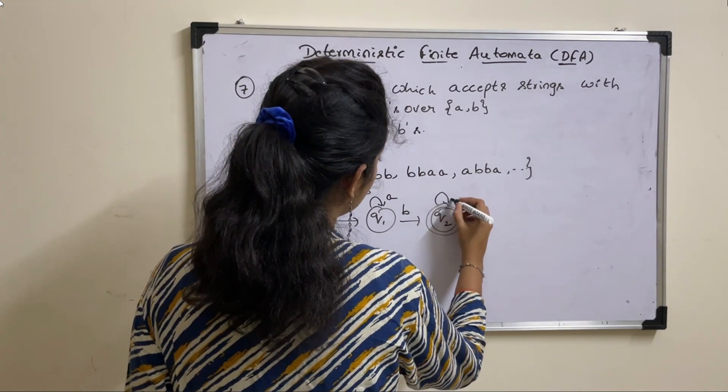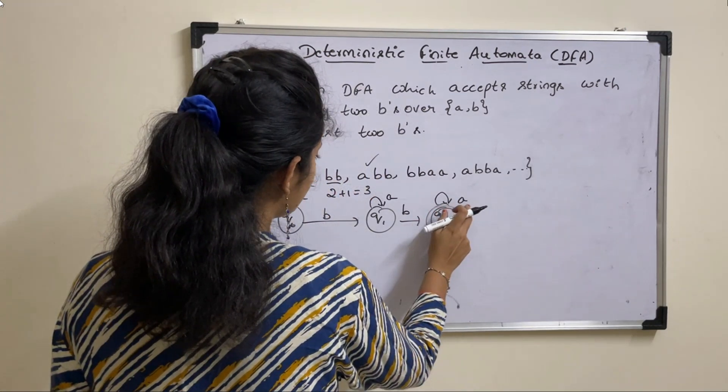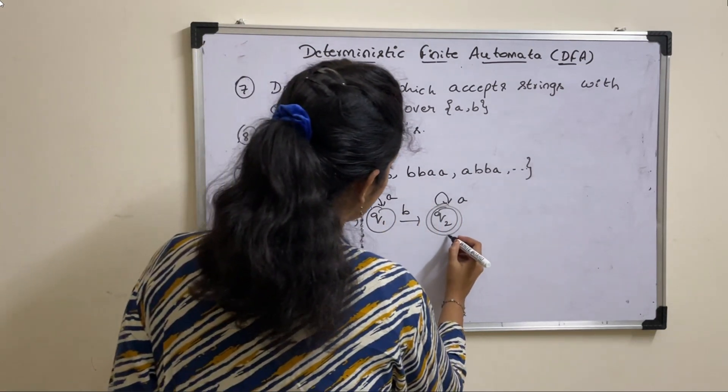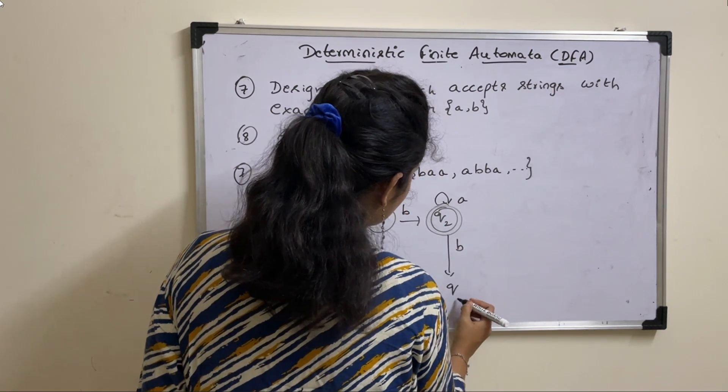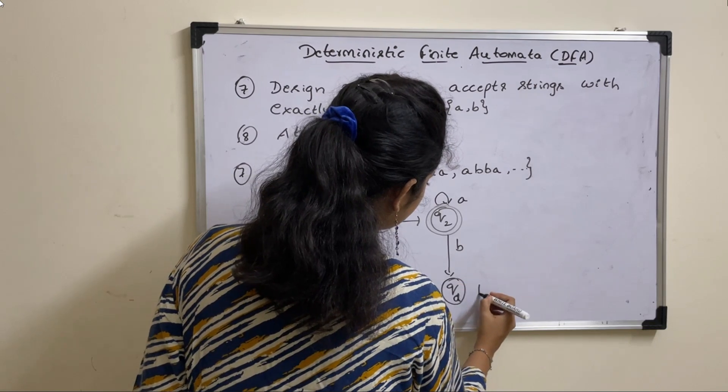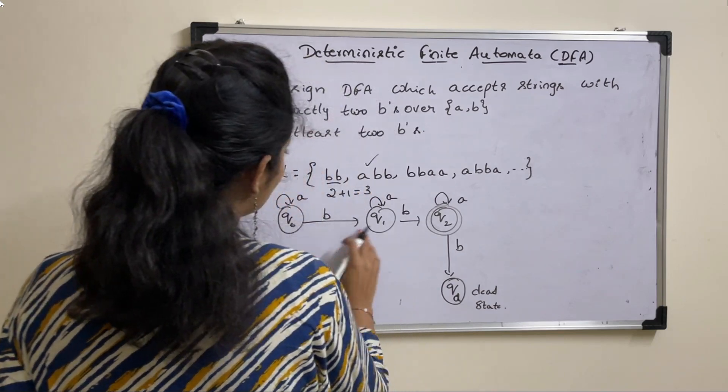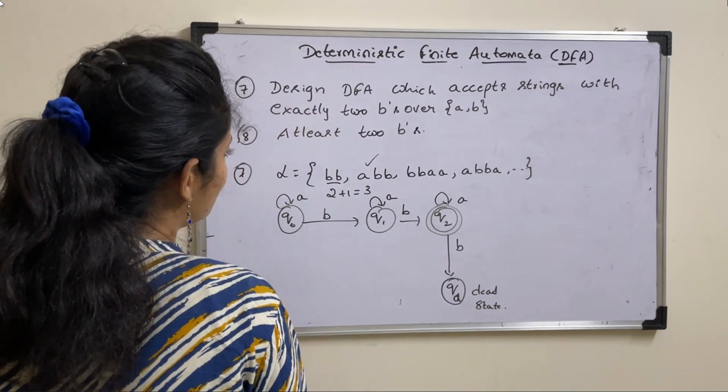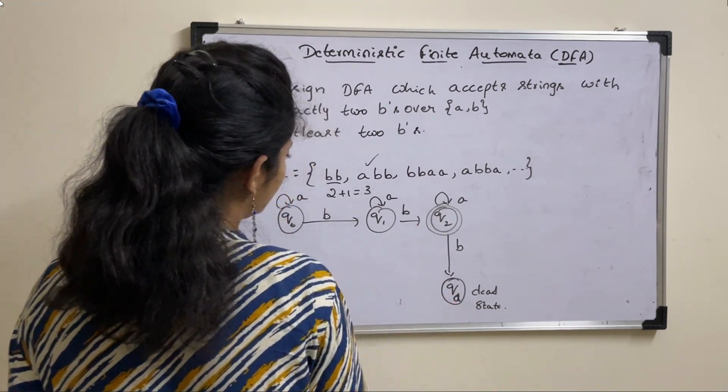Next, on Q2, you can have any number of A's. You can't apply B's here because we already got exactly two B's. So when you get B, automatically will move to dead state. So if any string contains more than two B's, then those strings are not accepted by DFA here. They will reach dead state.